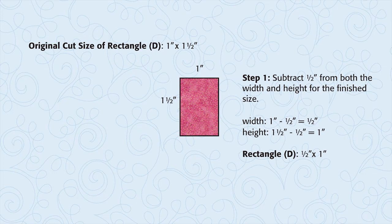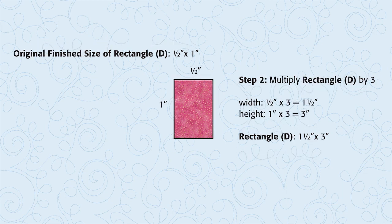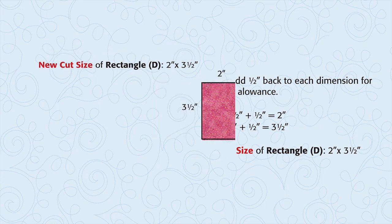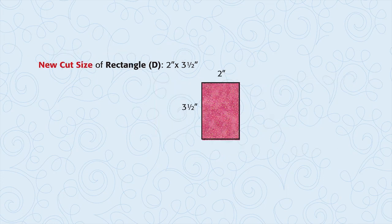Patch D is cut one inch by one and a half inch. Subtract a half inch from both the width and the height for the finished size. D finishes a half inch by one inch. Now multiply by three for the bigger finished size. A half inch times three equals one and a half inches. And one inch times three equals three inches. Now add the half inch back to each dimension for the seam allowance. One and a half plus a half equals two inches. Three inches plus a half equals three and a half inches. So the new D patches will be cut two inches by three and a half inches.